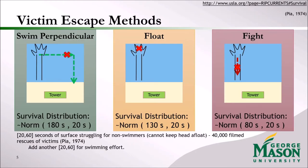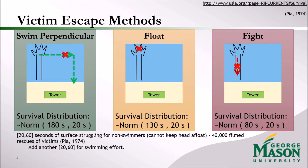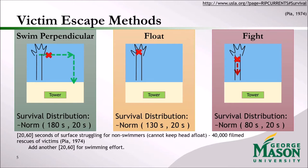There are three main victim escape methods. The first is to swim perpendicular to the rip current, then parallel to the rip current towards the shore. However, most just float because they are unable to swim. What's not recommended is for a victim to fight the rip current, which leads to the victim drowning quicker, as the rip current is a lot stronger.